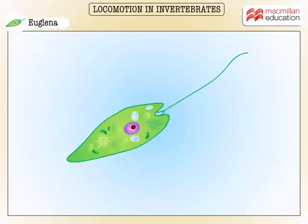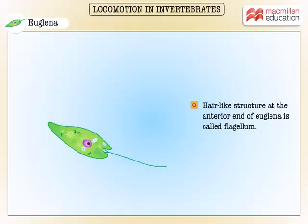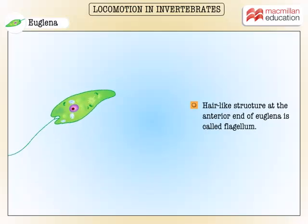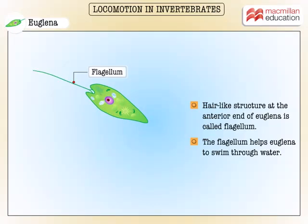Euglena is a freshwater microscopic animal. It moves forward in a spiral path. The hair-like structure at its anterior side is called flagellum. A flagellum helps the euglena to swim through water.